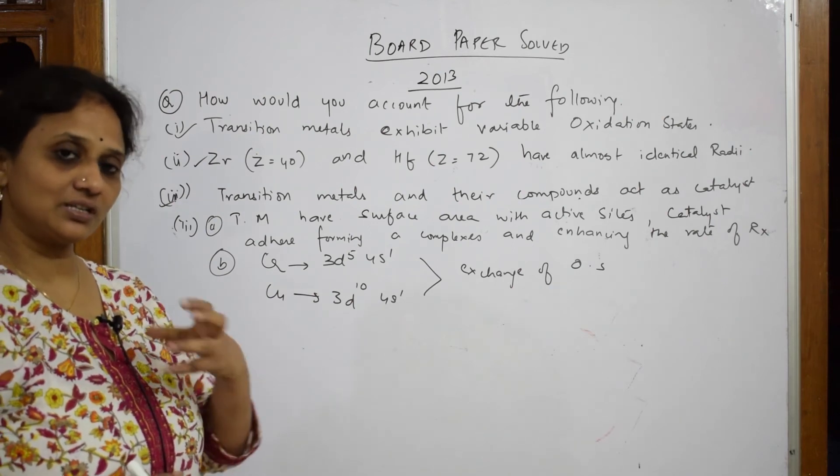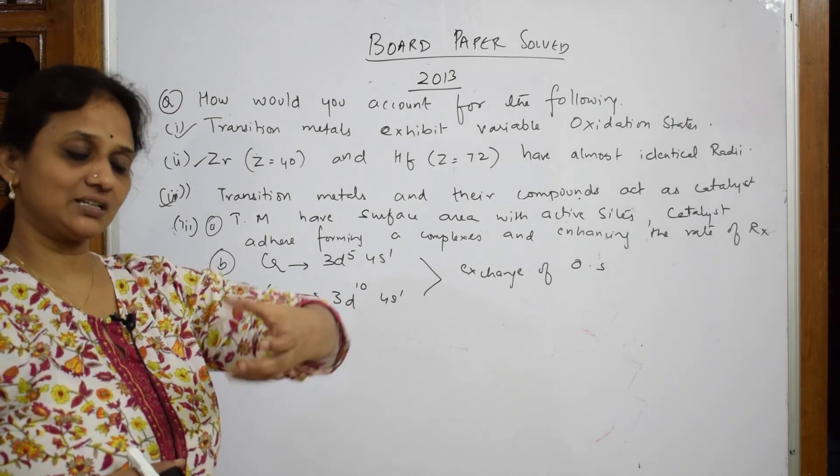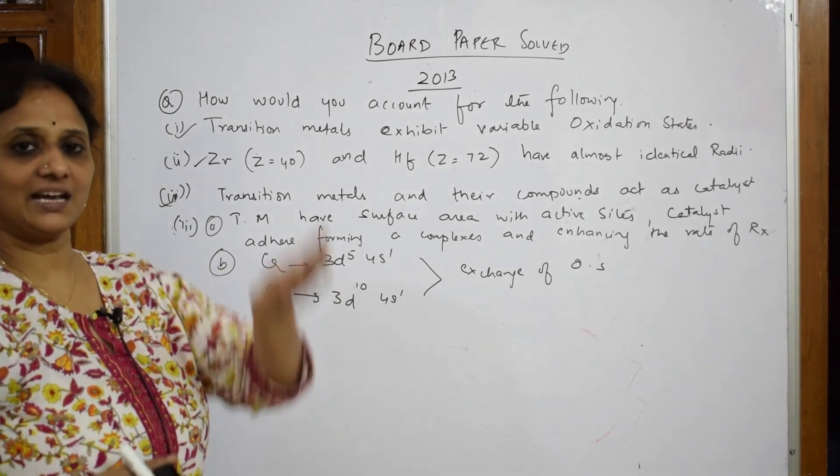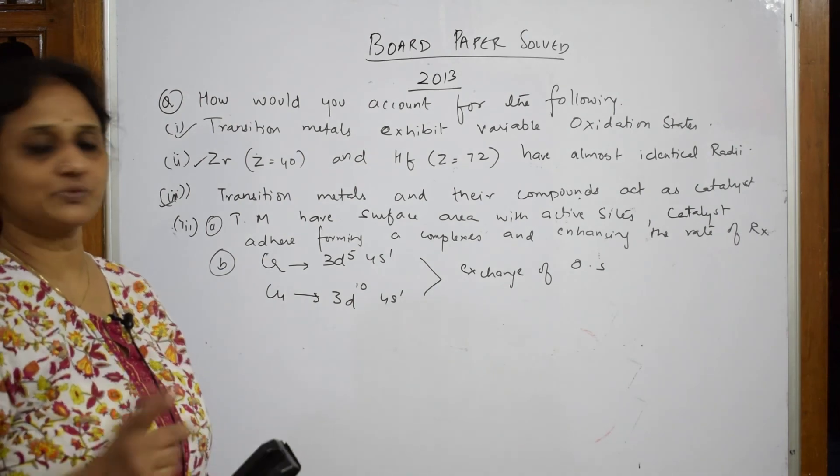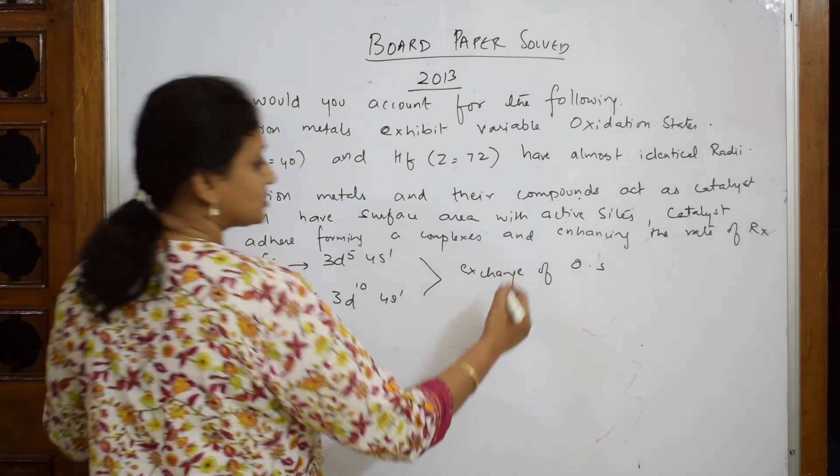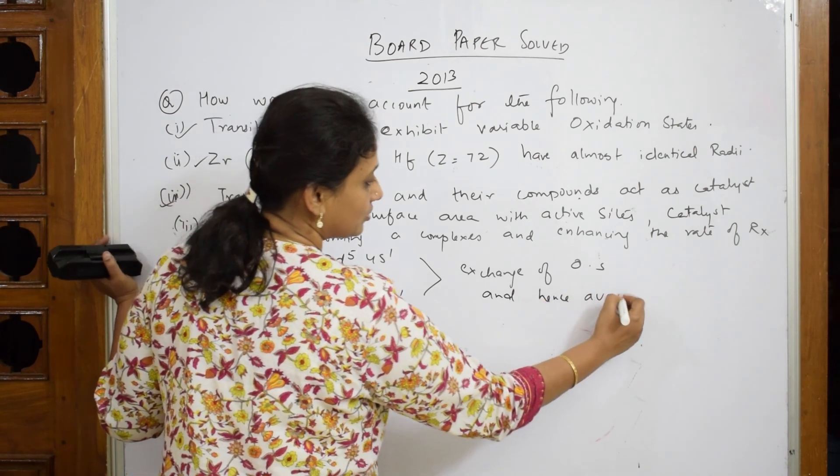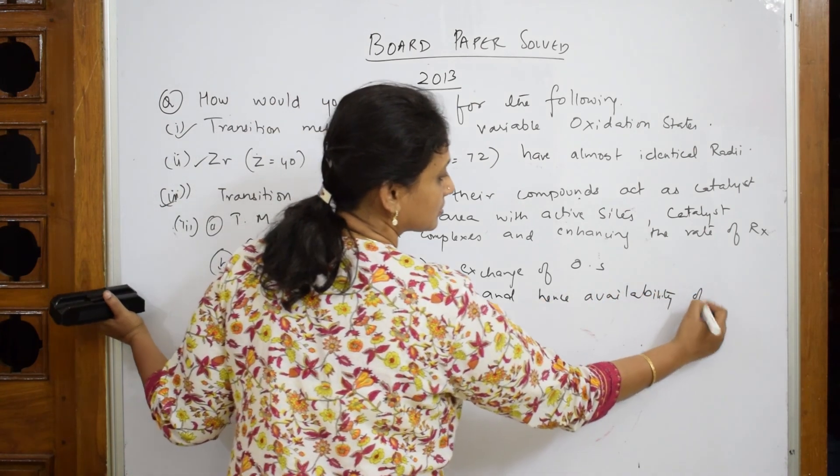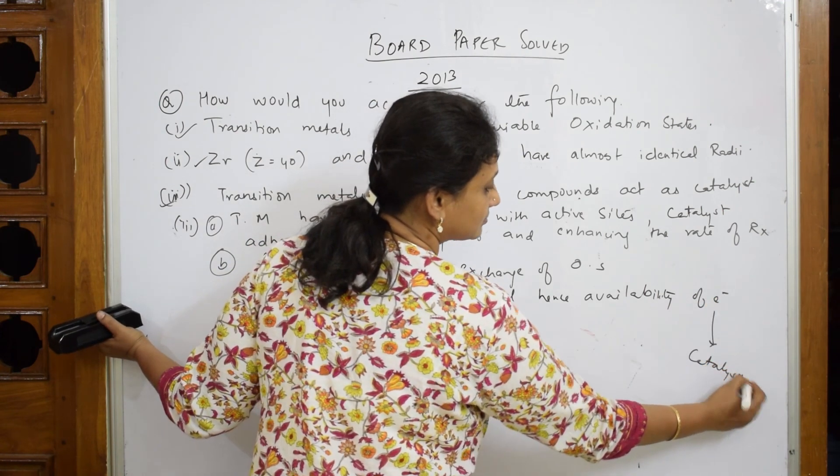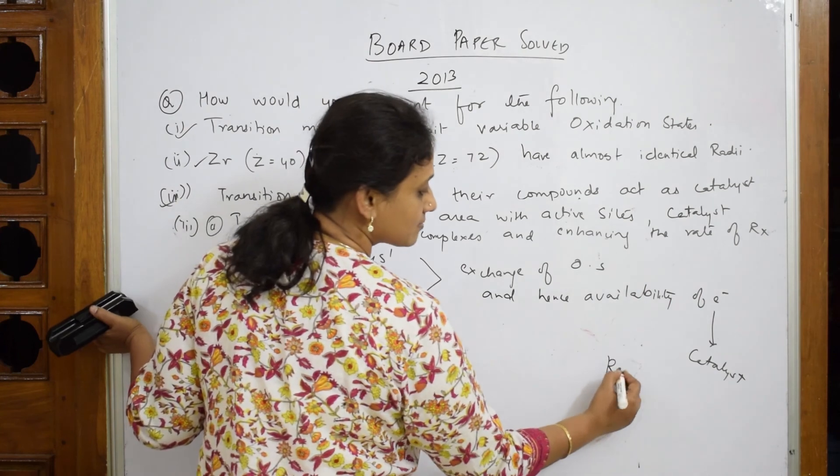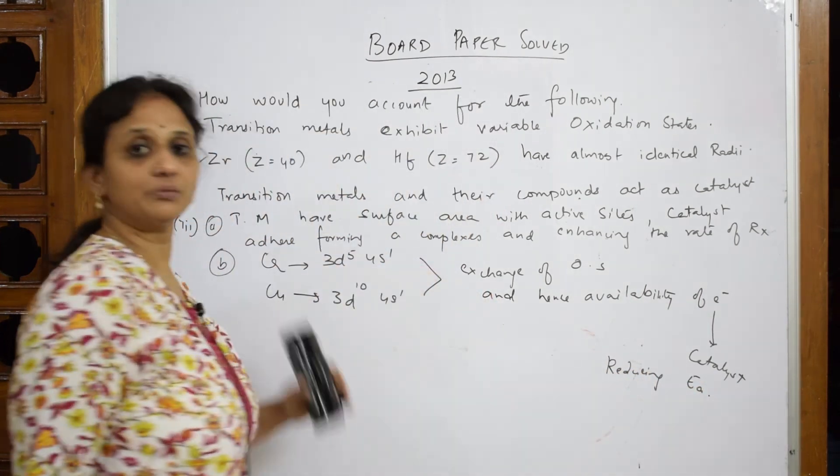Yes. So what does it do? That particular thing, as I said it's going to fix in that active site and enhance the reaction and lowers the energy of activation energy barrier and forms the products. So exchange of oxidation state and hence availability of electrons, which makes them act as catalyst, whereby reducing energy of activation and forming products.